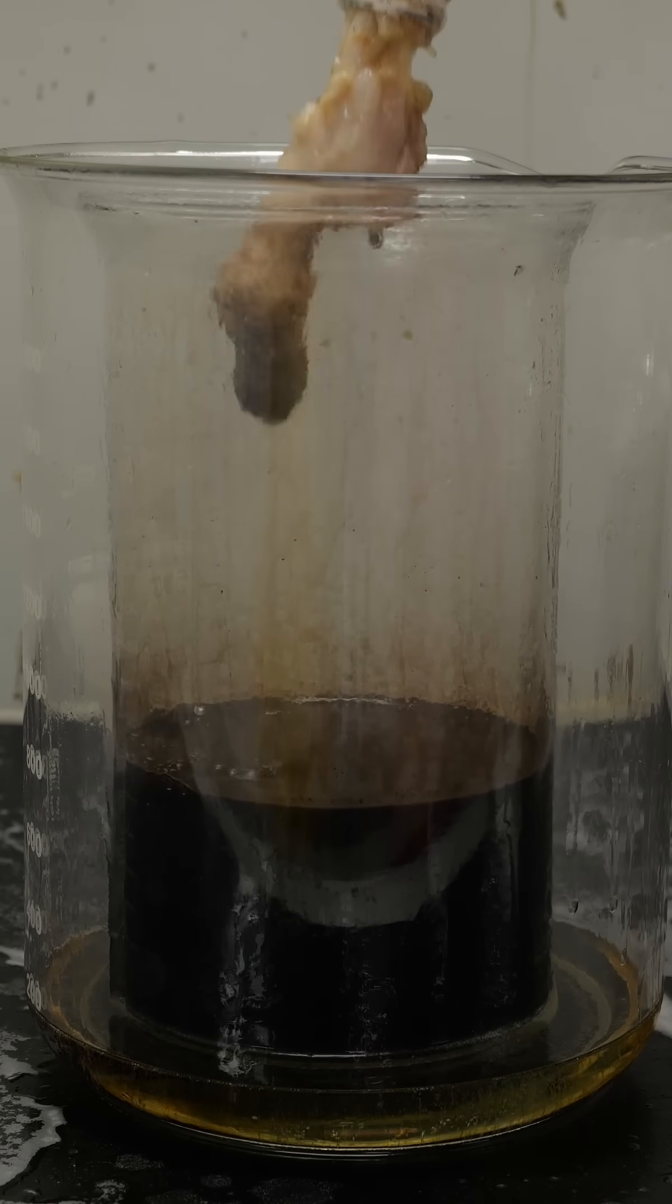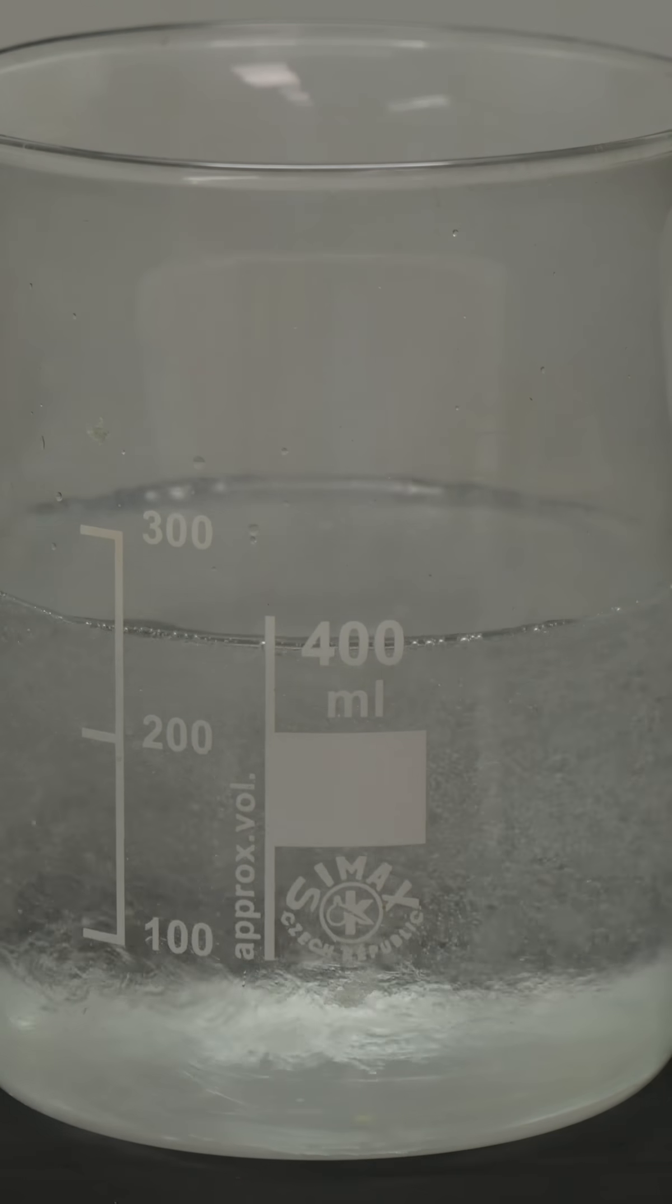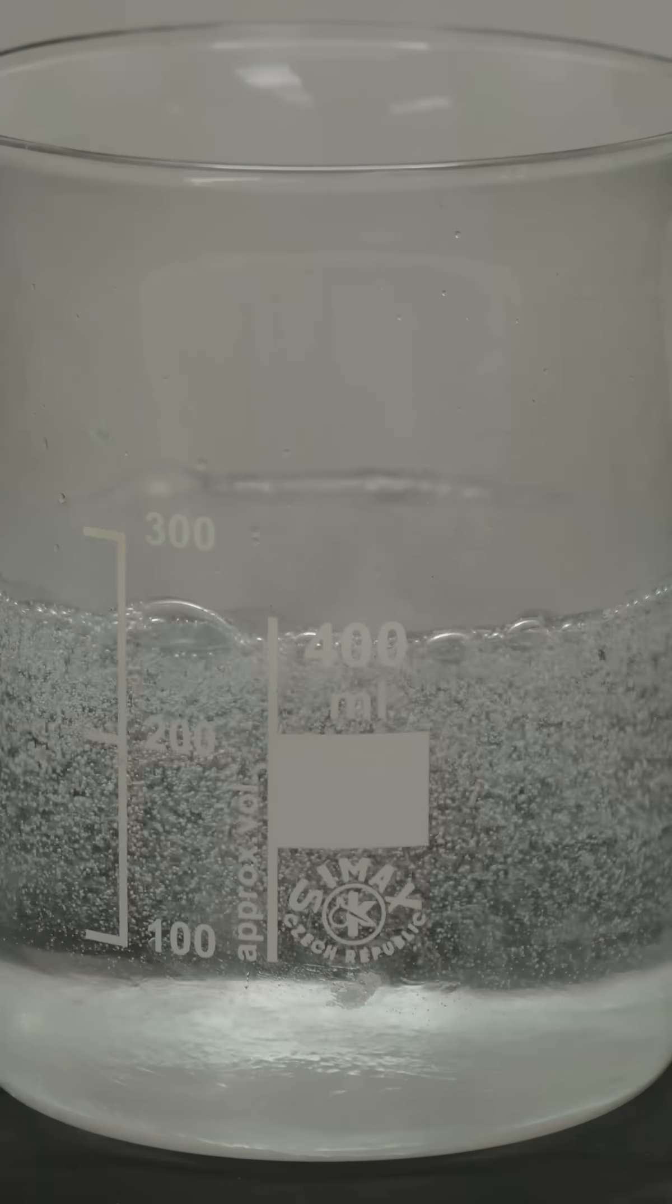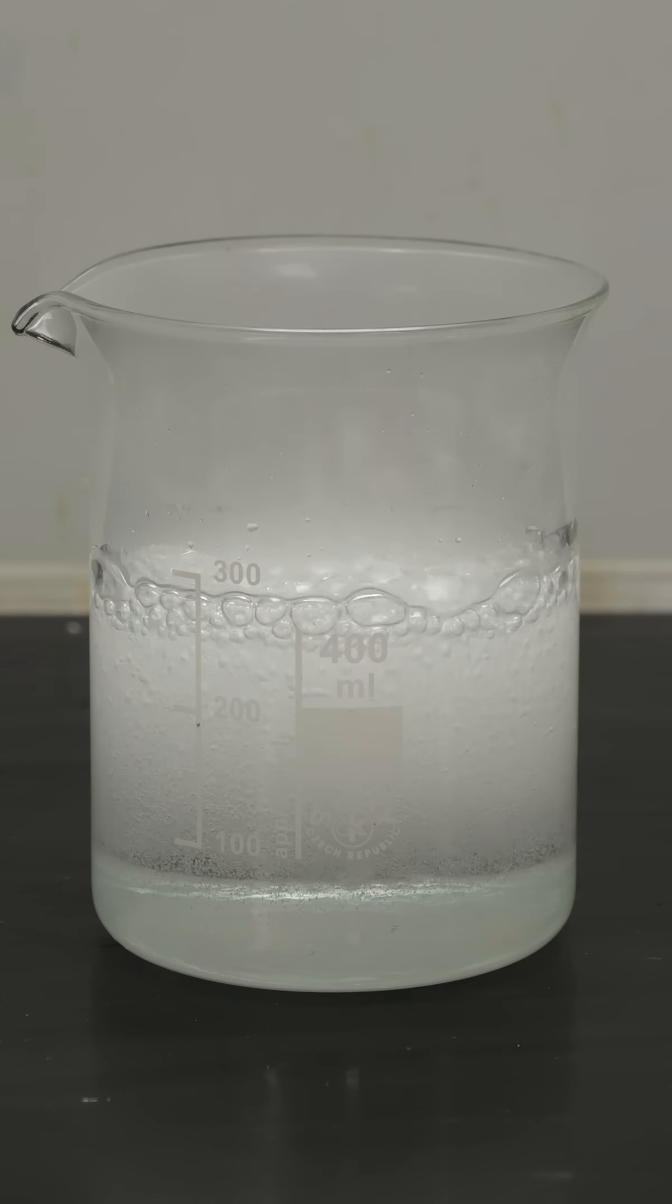Piranha acid is a mixture of concentrated sulfuric acid and hydrogen peroxide. Both are chemicals that are dangerous on their own. When mixed, they form peroxosulfuric acid, aka piranha acid, and the mixture spontaneously starts to boil.